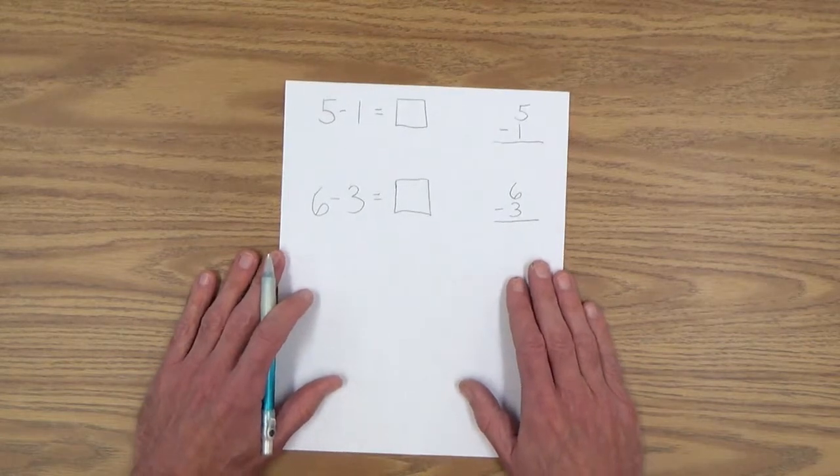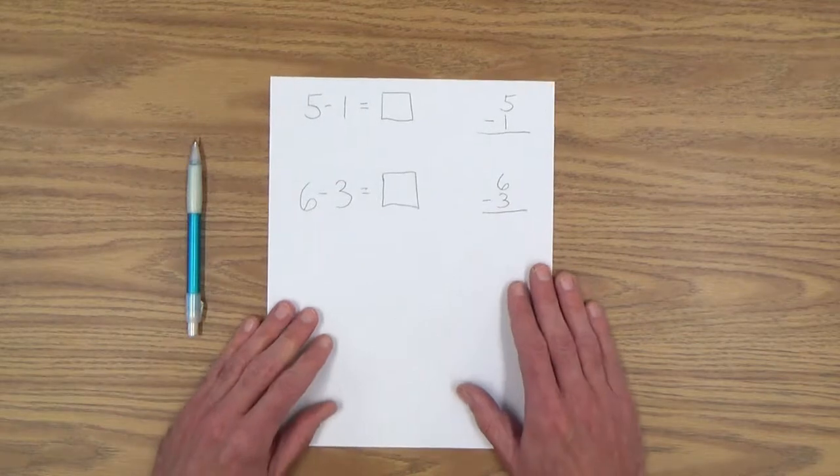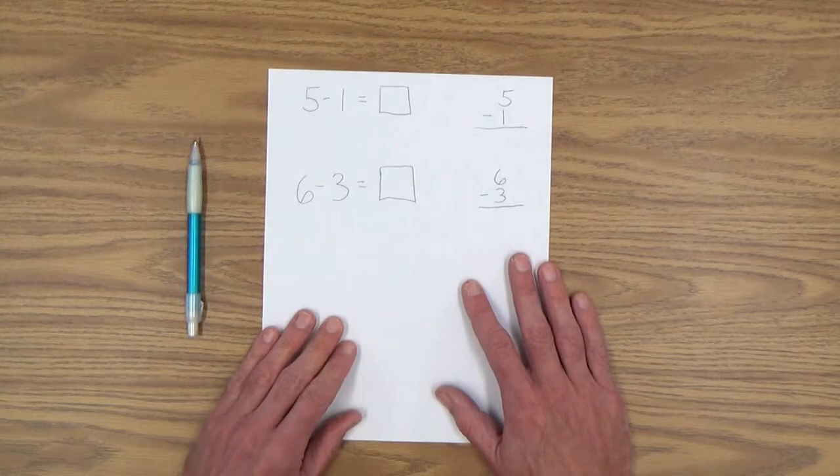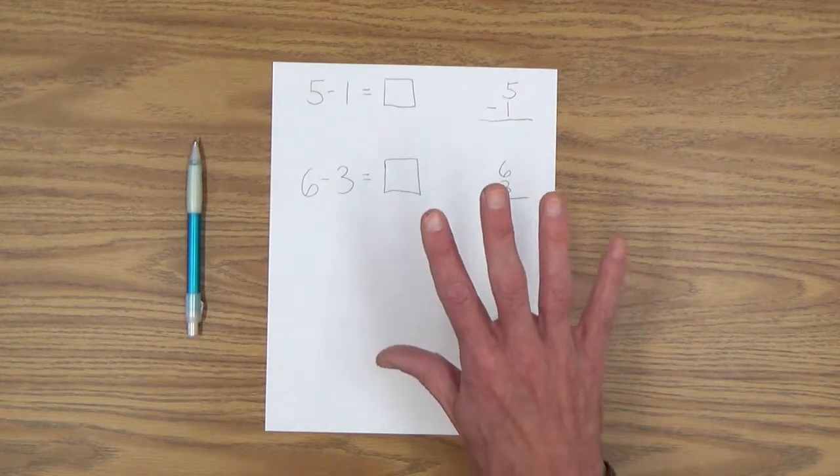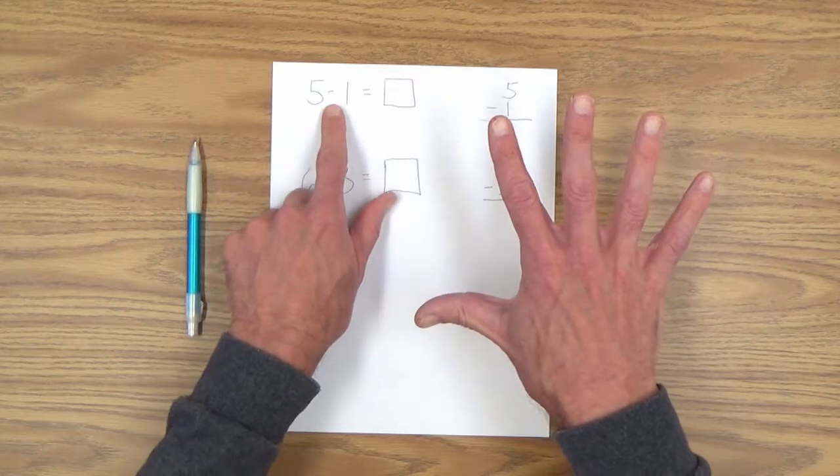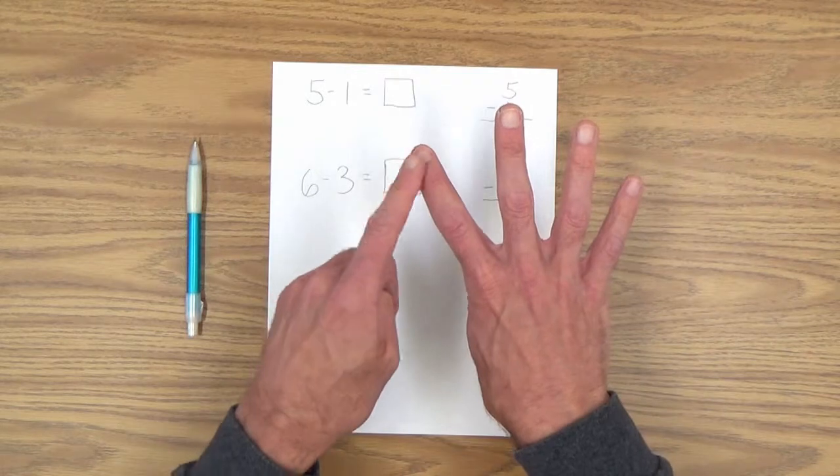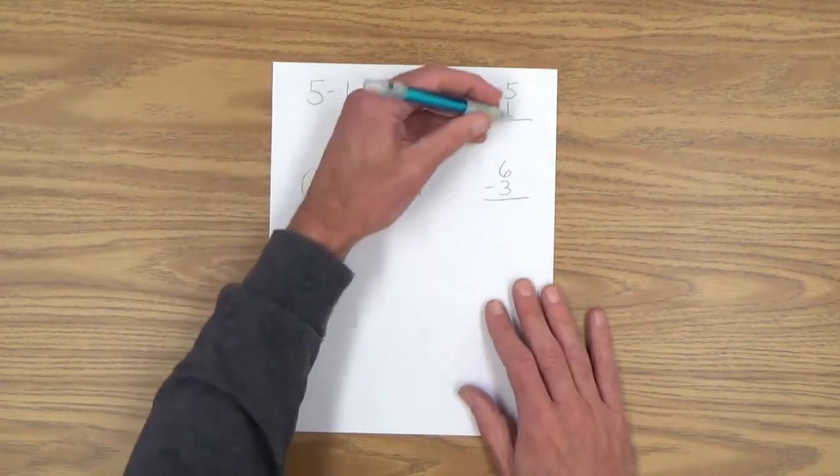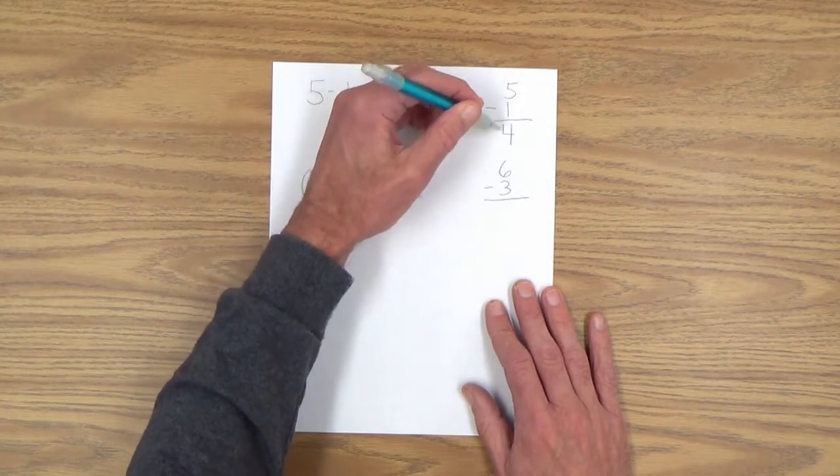At this point, let's say finger counting only, no more number lines or tally marks. You could have your child hold out five fingers, five, take away one, and have her count how many are left. One, two, three, four. Let's forget about these and just work in the column form here. Five minus one equals four.